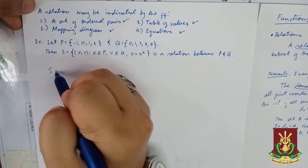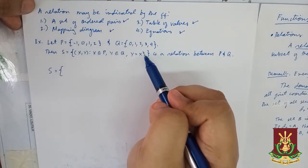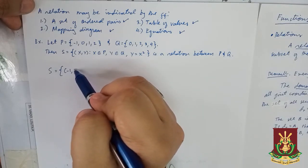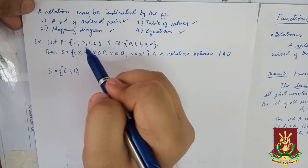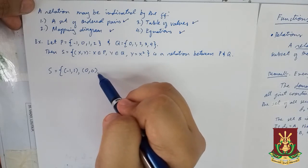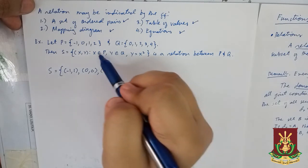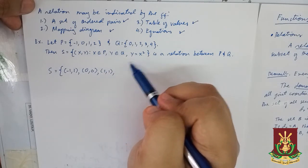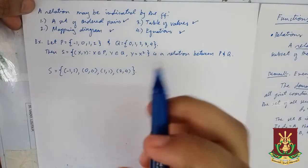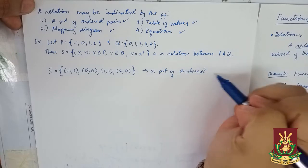We may rewrite S as the set containing: when X is -1, (-1)² = 1, giving us the ordered pair (-1, 1); when X equals 0, 0² = 0, giving us (0, 0); when X equals 1, we get (1, 1); and when X equals 2, Y equals 4, giving us the ordered pair (2, 4). This is a set of ordered pairs.